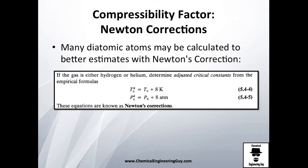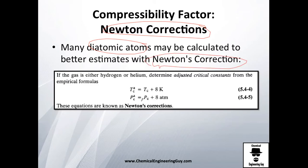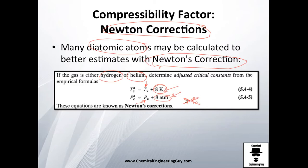Just a quick note on the Newton corrections. Many diatomic molecules may be corrected with this principle. Newton corrected the actual diatomic molecules such as hydrogen, helium, and so on. For all diatomic molecules, instead of just using the critical temperature, add 8, and for the pressure, add 8 as well. Be sure to use these units — use atmospheres, not Pascals.